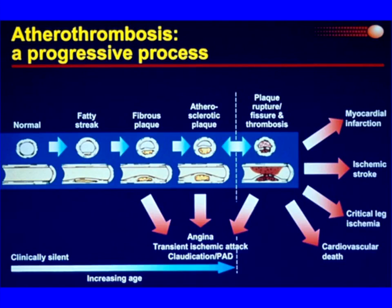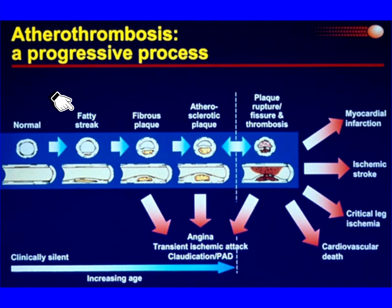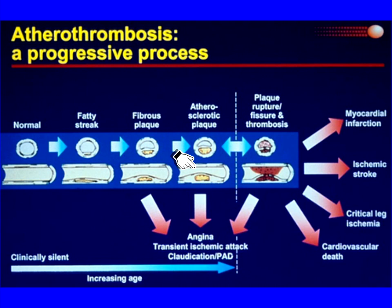This cartoon illustrates what's happening to us throughout life. If we start at birth, we have normal arteries, nice and clean. Then, although a clinically silent process, as we age, we develop fatty streaks in our teenage years. Most of us in this room have developed to the stage of being a little bit fibrotic. And then older people are becoming a bit atherosclerotic, meaning that the lumen of the artery is being occluded by 50% or more. At that stage, we may start getting stable angina, reversible acute myocardial ischemia when we walk or get excited, TIAs, or claudication.